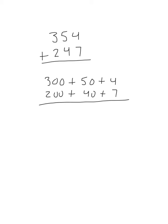So when we go to add them together, 7 plus 4 is 11. 5 tens, or 50, and 4 tens, which is 40—so 5 tens and 4 tens is 9 tens, which is 90, and 300 plus 200 is 500.